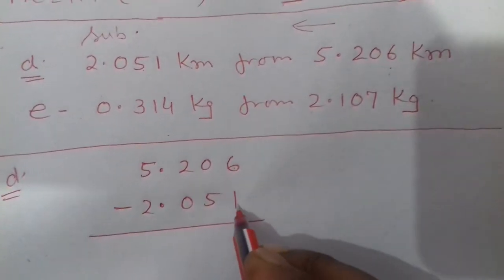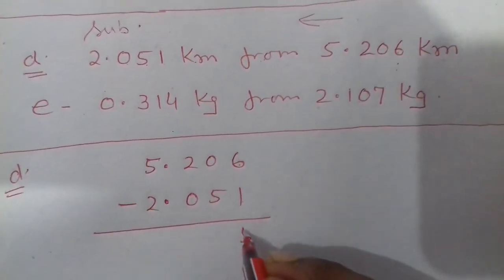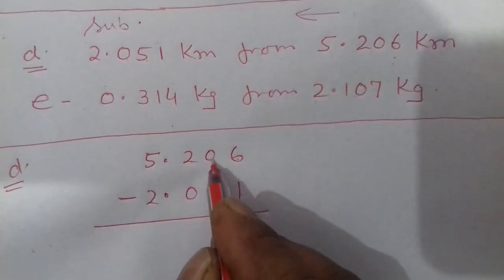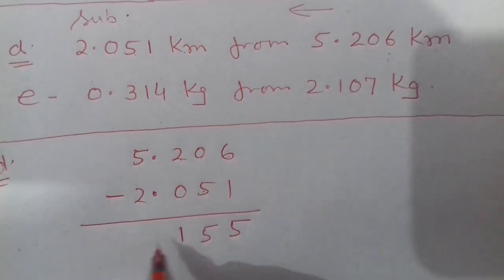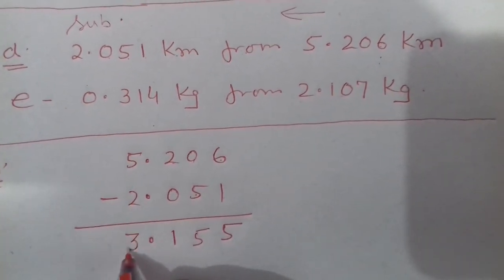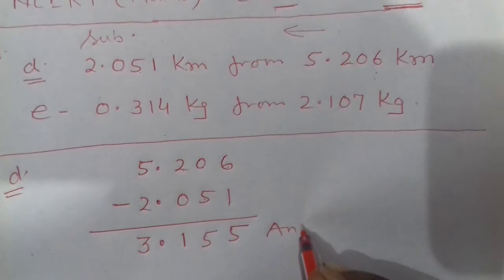We subtract 6 mein se ye minus ho ga 5. Yahaan pe ho gaya 10. 10 mein se ye minus ho ga 5. And we get here 1, decimal ke place pe decimal. And this is your answer number D.